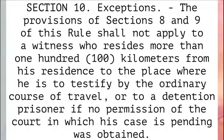Section 10: Exceptions. The provisions of Sections 8 and 9 of this rule shall not apply to a witness who resides more than 100 kilometers from his residence to the place where he is to testify by the ordinary course of travel, or to a detention prisoner if no permission of the court in which his case is pending was obtained.